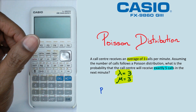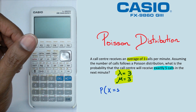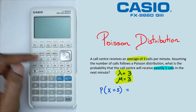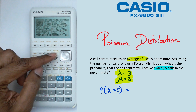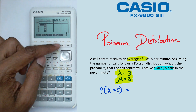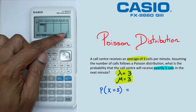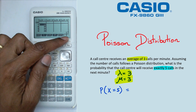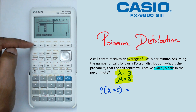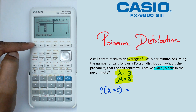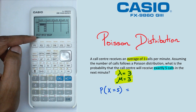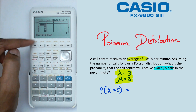To do this on the calculator, we're going to switch on the calculator, go into the main menu, go into stat mode. Next, we're going to go into distribution, which is F5. Then we click on F6 to go to the next page of menus. When we do that, we can see Poisson here under F1, so we click on F1. For this question we're looking for the exact value, so we're going to use the PPD function, which is F1.